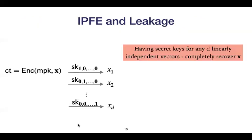Let's talk a bit about leakage. It turns out that if you have d keys — for example, the keys for the canonical vectors — then you can decrypt and obtain each component of x. In fact, you can recover the entire plaintext x. So as long as you have d linearly independent vectors, you can completely recover the plaintext. In practice, this means you have to keep track of the keys you generate, because once you reach that point, you don't have security anymore and the plaintexts are completely recoverable.